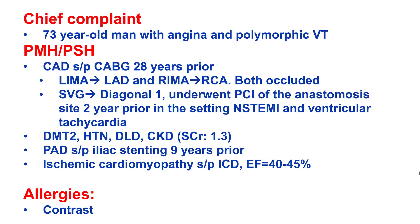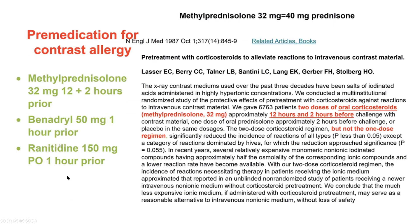The patient was an elderly gentleman who presented with angina as well as polymorphic ventricular tachycardia. He had previous coronary bypass 28 years prior with bilateral IMA grafts, unfortunately both of which were occluded. He also had a vein graft to the first diagonal that was filling the LAD and had undergone PCI two years prior. He also had previous iliac stents, cardiomyopathy, and contrast allergy, and was premedicated for the contrast allergy before diagnostic angiography.